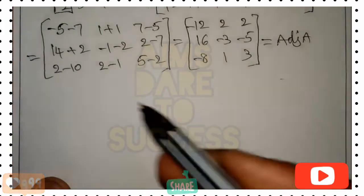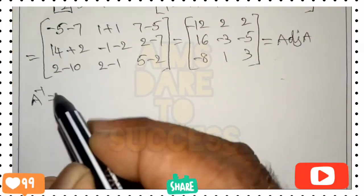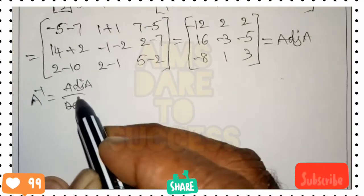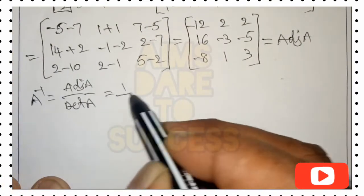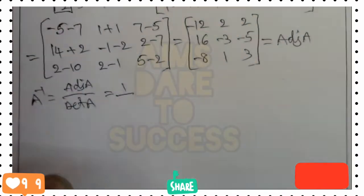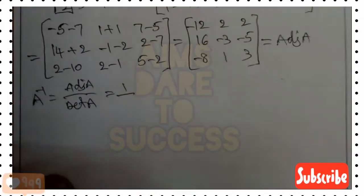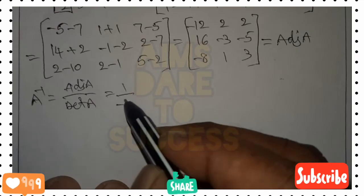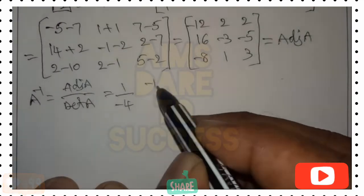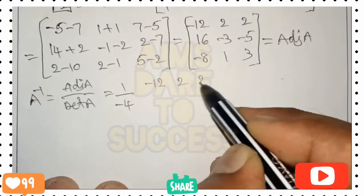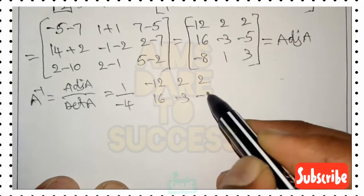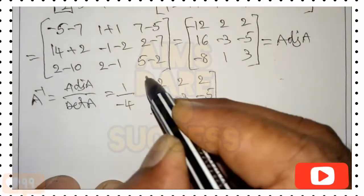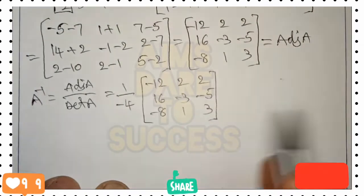Now we find A inverse. A inverse equals adjoint(A) divided by det(A). So A inverse equals (1 / -4) times the adjoint matrix [-12  2  2 / 16 -3 -5 / -8  1  3]. We do not multiply the (1/-4) inside yet, to avoid getting irrational or fractional numbers early.